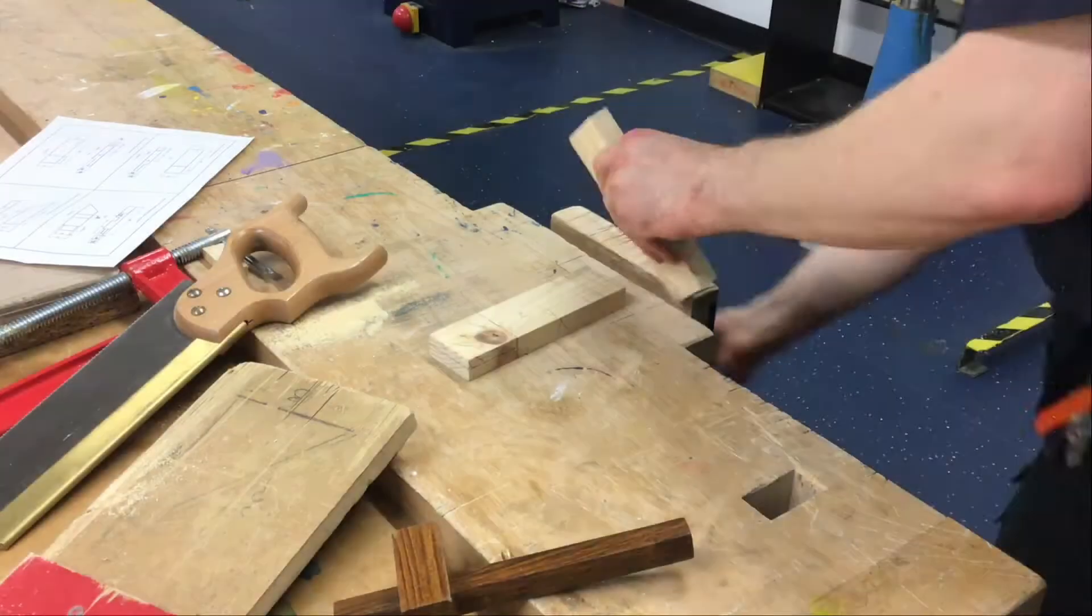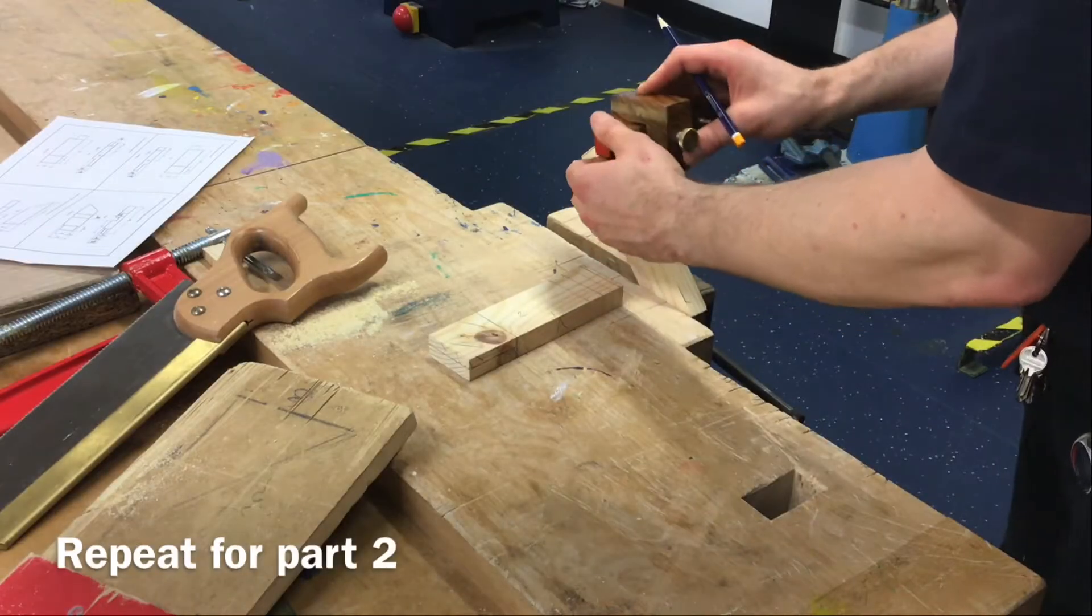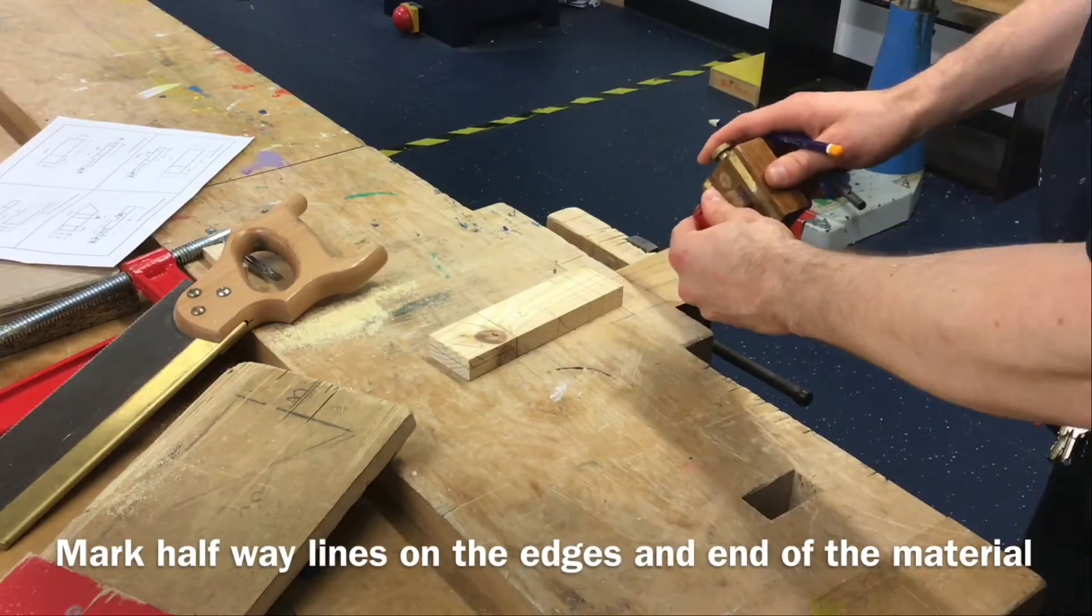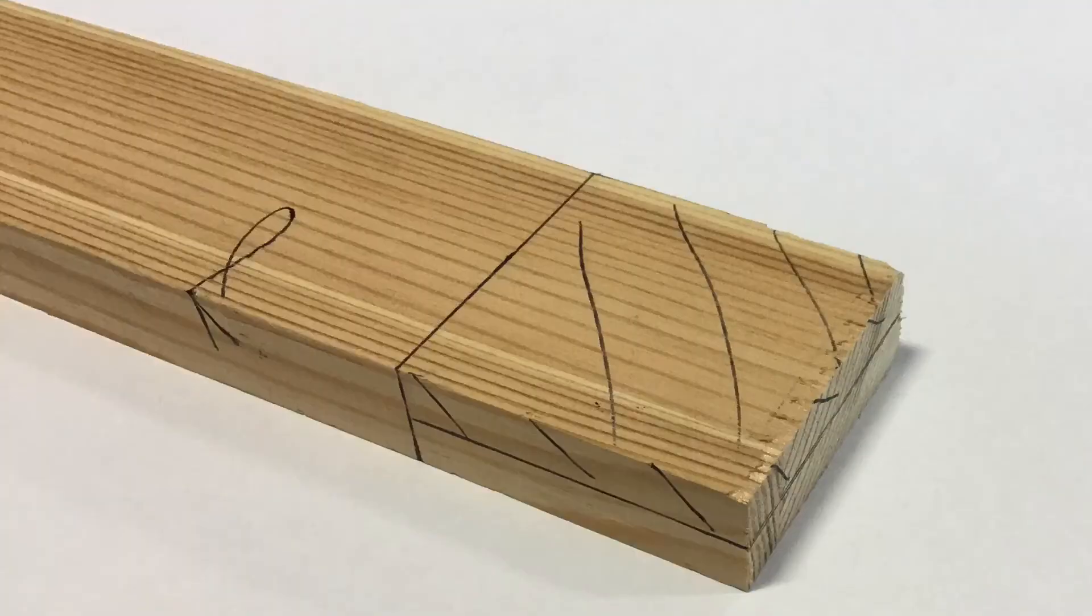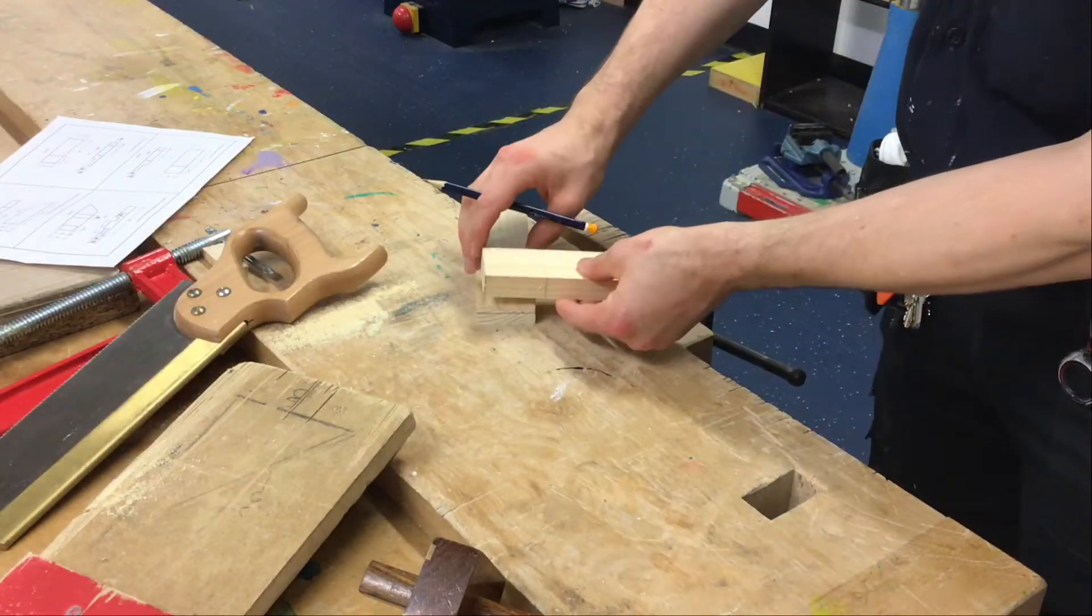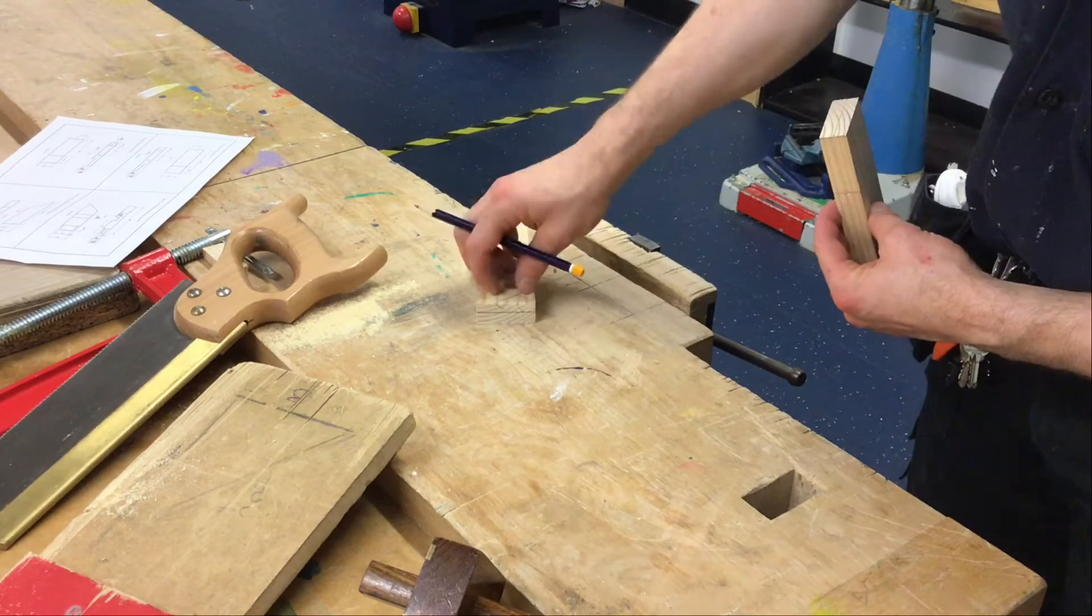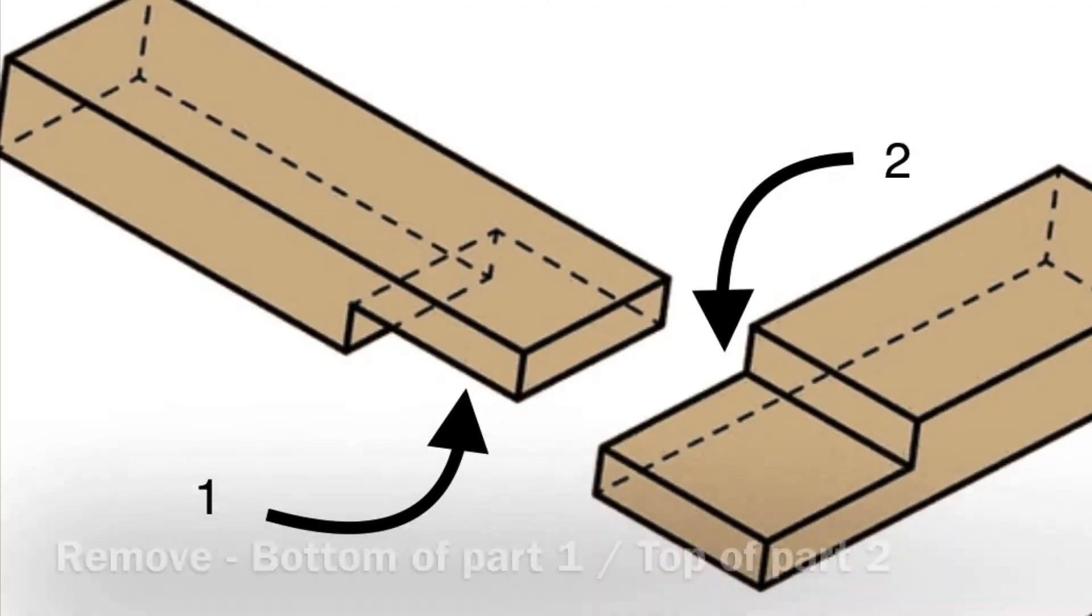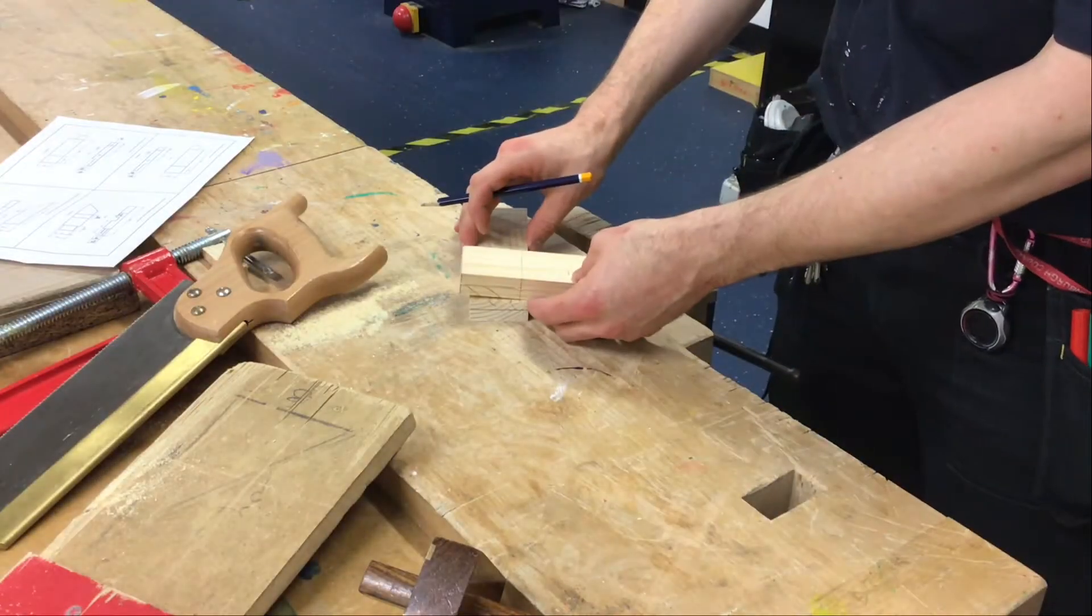So I'll go across the edge, along the end grain, across the edge. I'm going to mark on hatching lines to say that's waste material. I'm checking if one goes on top of two, then I want the top side of two to be removed and the underside of one to be removed. And it's now ready to cut.